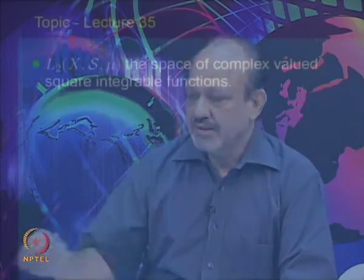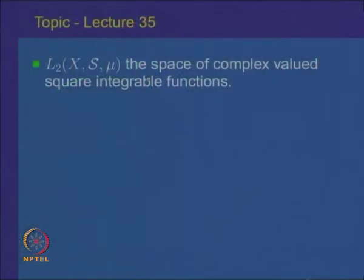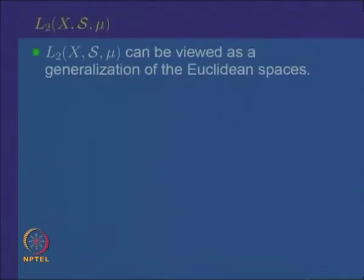Welcome to lecture 35 on measure and integration. In the previous lectures, we had been looking at the p-th power integrable functions on a measure space X, S, mu, and studied some general properties of these function spaces. Today, we will look in more detail at the special subspace when p equals 2 — the space L²(X, S, mu) of complex-valued square integrable functions. This is a special space in that it can be viewed as a generalization of the Euclidean spaces.